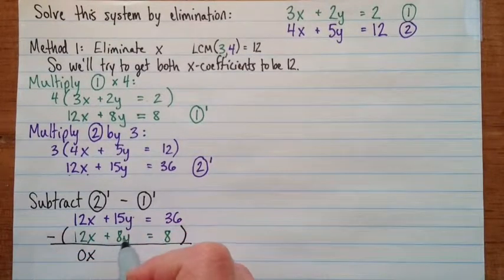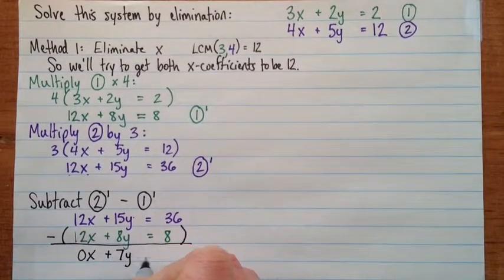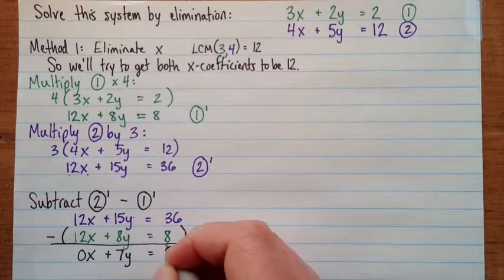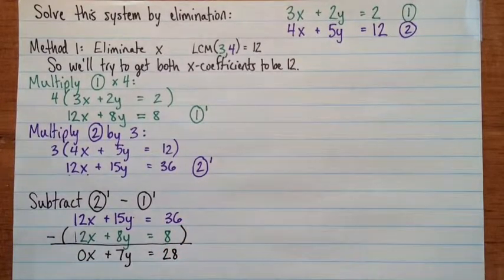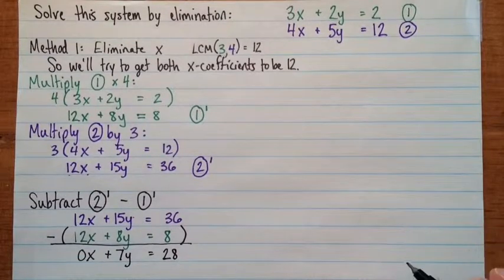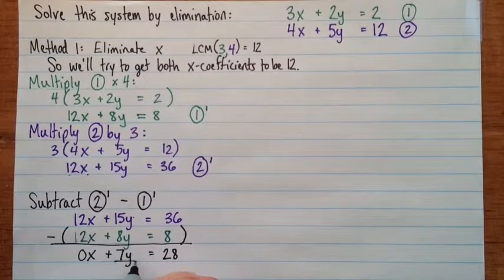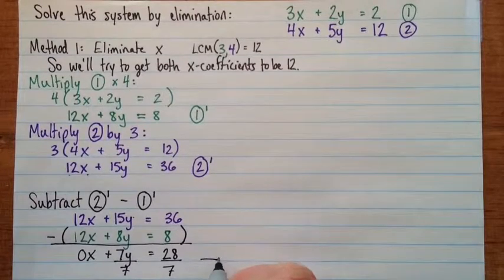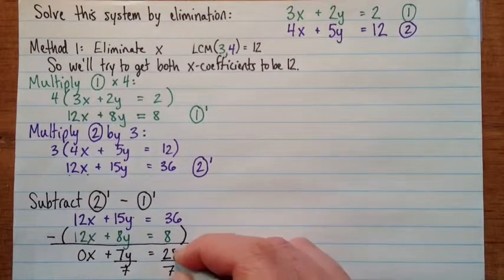So 12x minus 12x is 0x. 15y minus 8y is 7y. And then 36 minus 8 is 28. I'm just getting down near the end of my page. I'll keep going. So we can divide both sides by 7. And that gives us y equals 4.